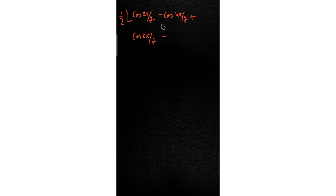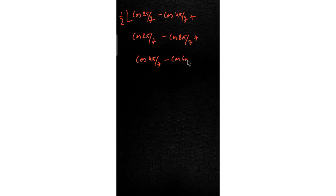Applying the same identity to the second pair: 2sin(3π/7)sin(5π/7) = cos(2π/7) − cos(8π/7). For the third pair: 2sin(5π/7)sin(π/7) = cos(4π/7) − cos(6π/7). So now we have ½ · [cos(2π/7) − cos(4π/7) + cos(2π/7) − cos(8π/7) + cos(4π/7) − cos(6π/7)].